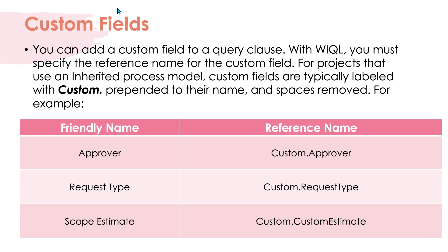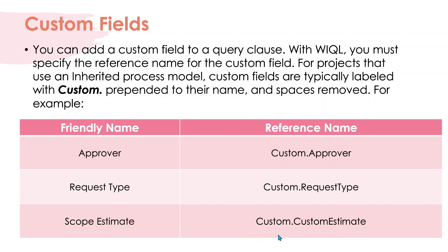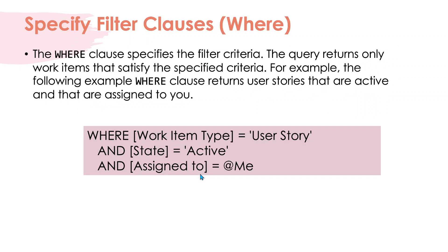Next, let's look at custom fields. You have the option to create custom fields in your WIQL query. For example, for a friendly field name like 'Approver,' the reference name would be 'Custom.Approver'; for 'Request Type' it would be 'Custom.RequestType'; for 'Scope Estimate' it would be 'Custom.CustomEstimate'. So you prefix the label 'Custom' before your field name.